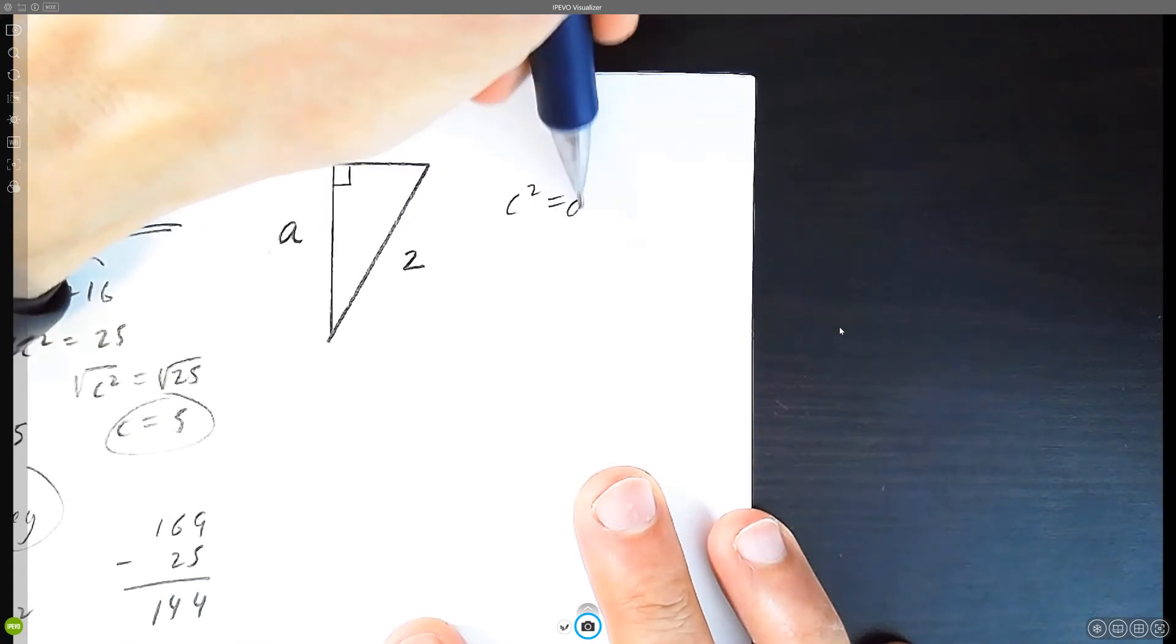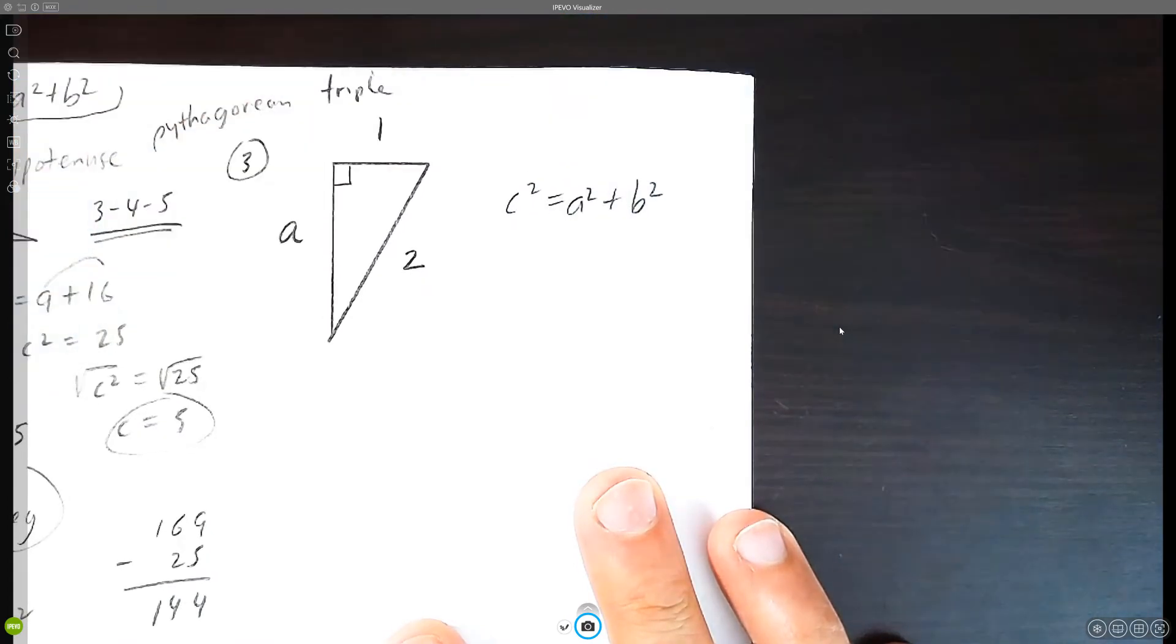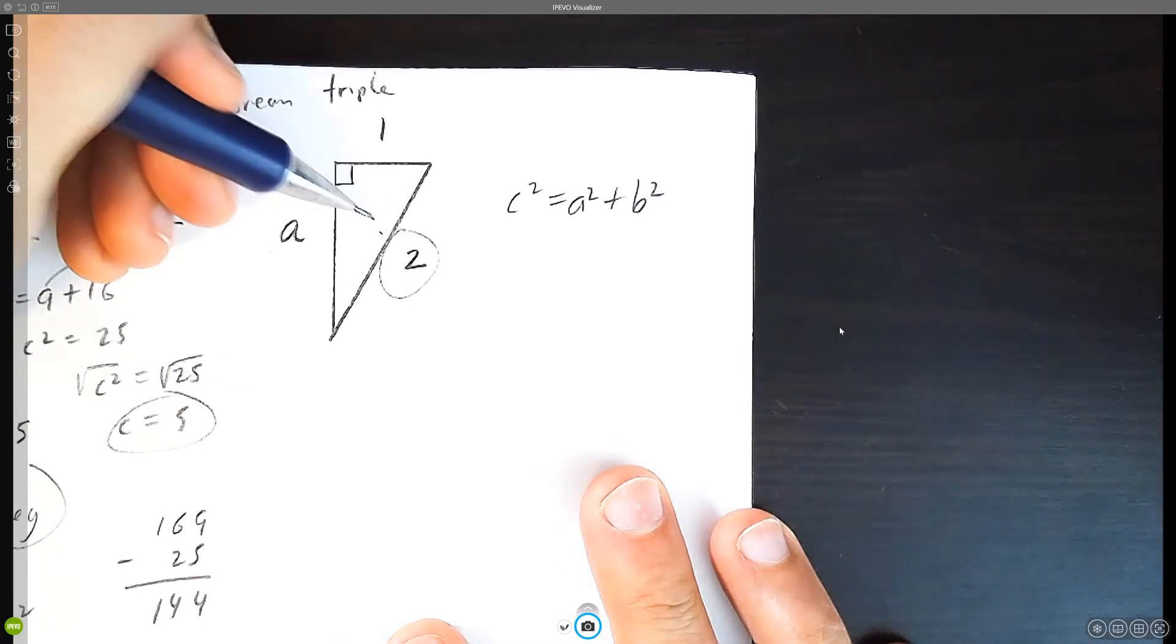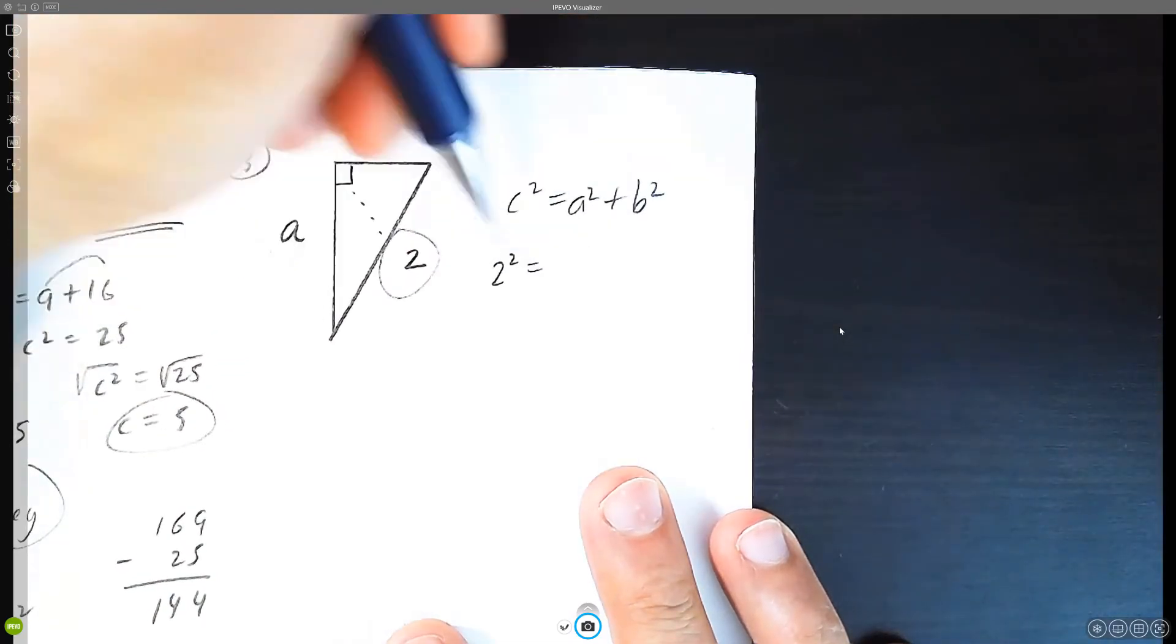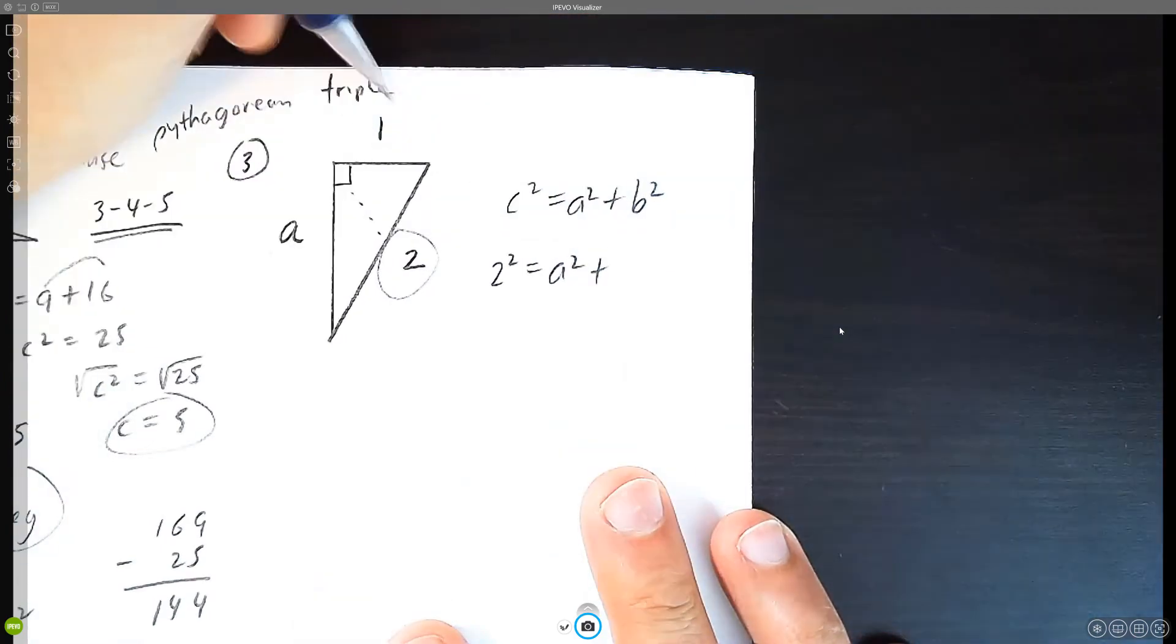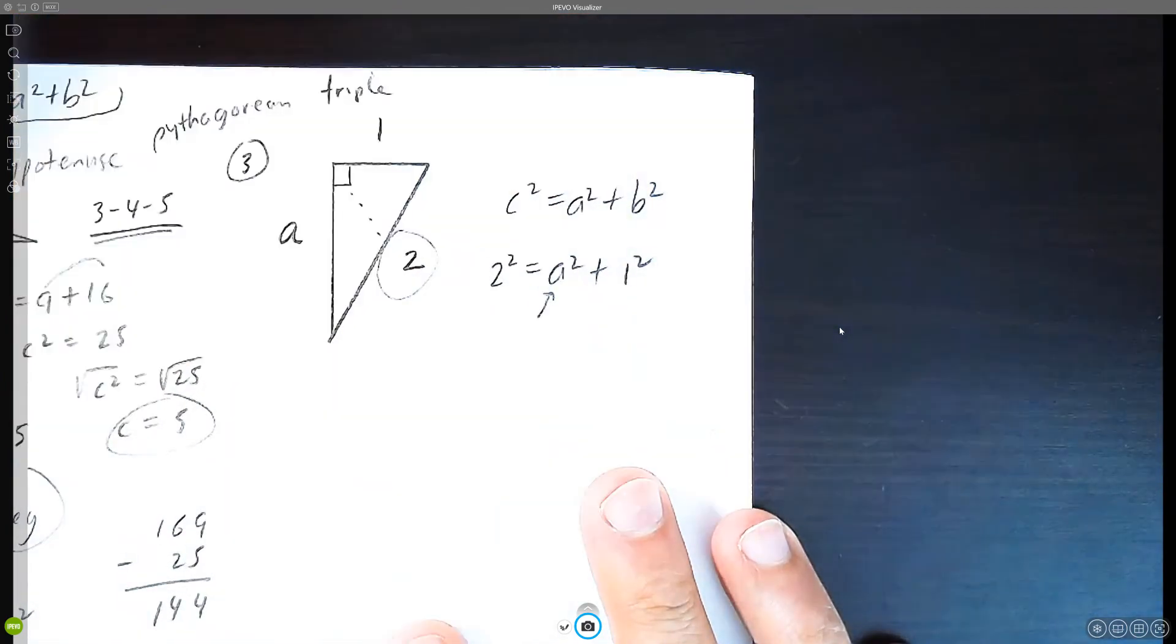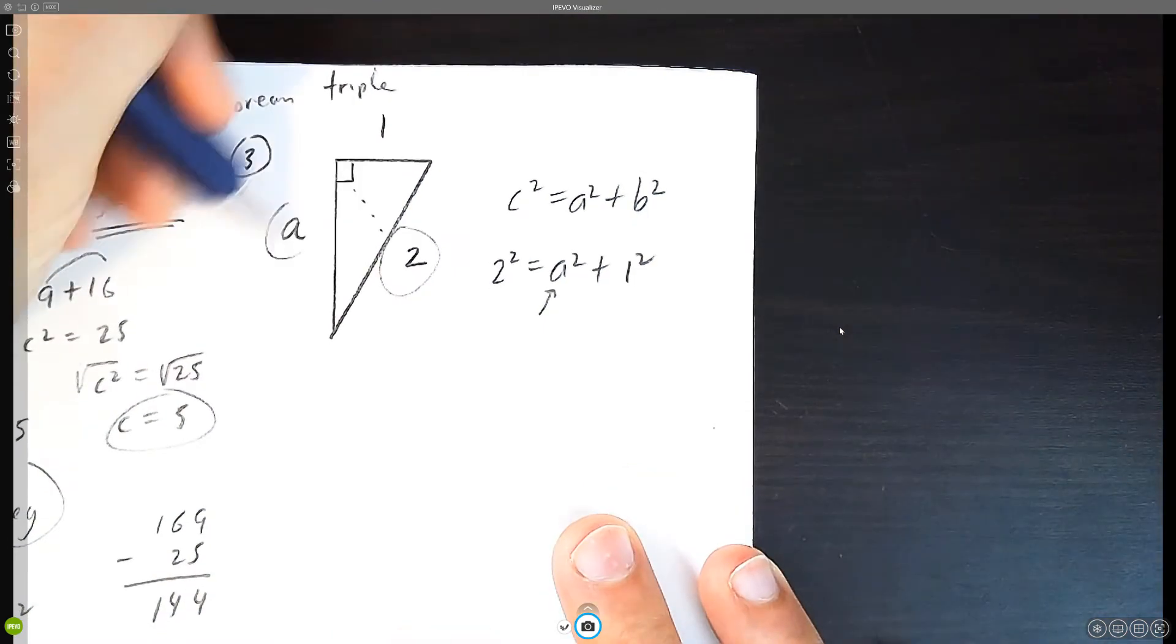Recall that c squared equals a squared plus b squared. This is the hypotenuse. It's the longest side that's across the right angle. We have two squared equals a squared plus one squared. And we're trying to solve for a.